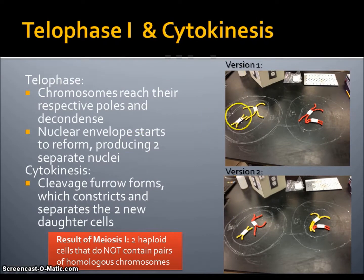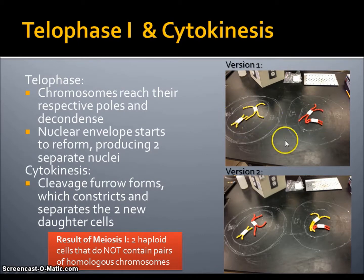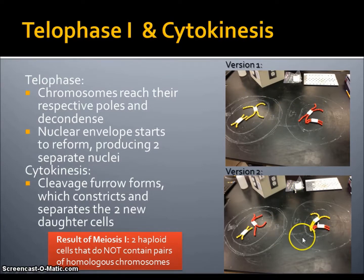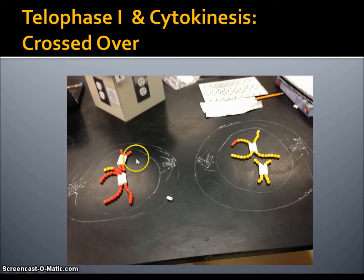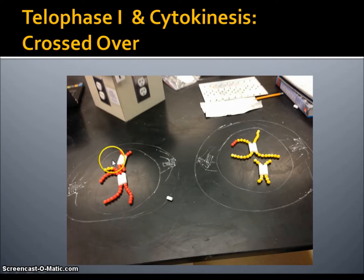Just to clarify: the small yellow and small red chromosomes — small yellow being paternal and small red being maternal — are homologous chromosomes based on size, and they are separated in each new cell. Here, the large yellow and large red are also homologous and are separated in each new cell. For our telophase I and cytokinesis crossed-over pair, our new cells are quite similar to version 2; however, we can't forget the crossing over that occurred back in prophase I, where the paternal contains several maternal genes and one maternal homologous chromosome contains several paternal genes.